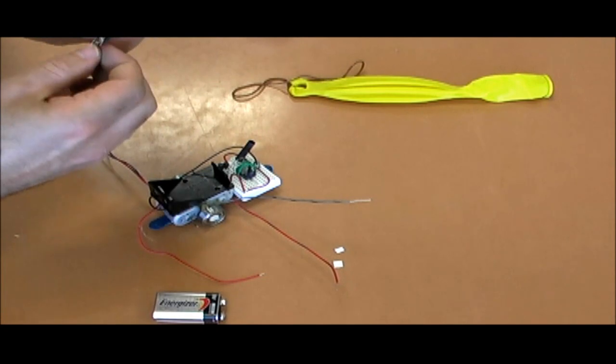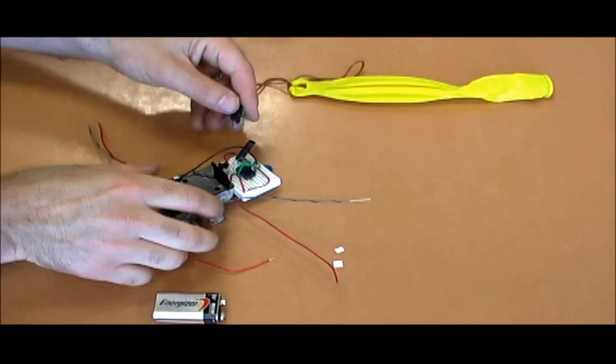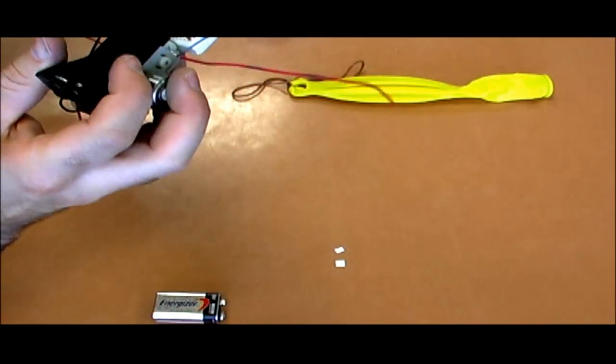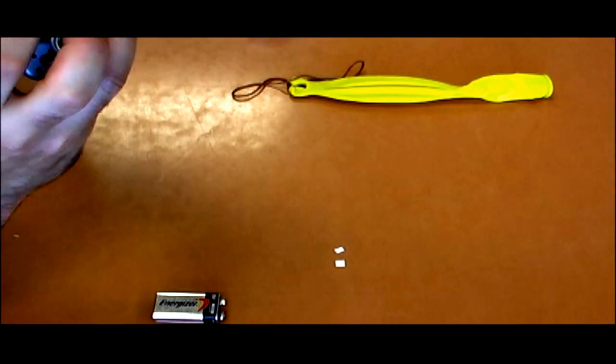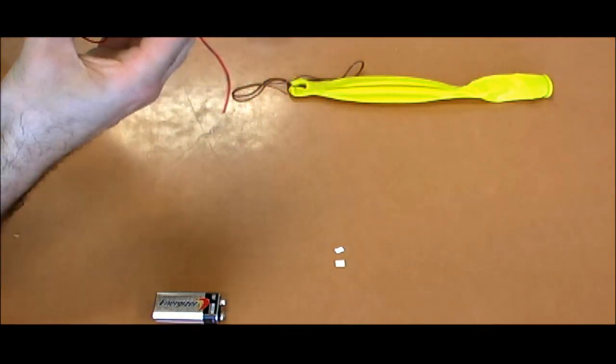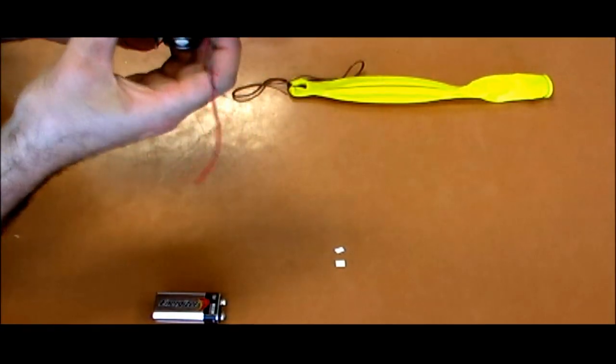Next I'm putting in the potentiometer. We only use the center and one lead of the potentiometer so I kind of bend one out of the way. It also, that one that I bend winds up fitting in the central furrow through the breadboard so it doesn't get connected to anything anyway.